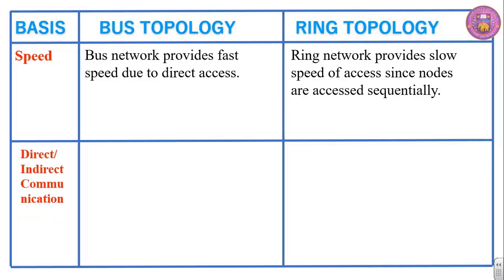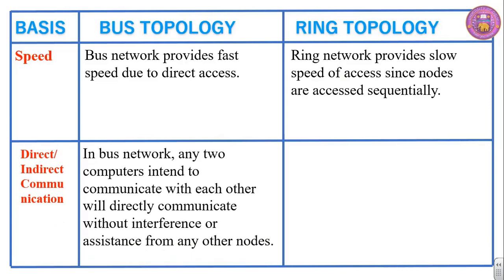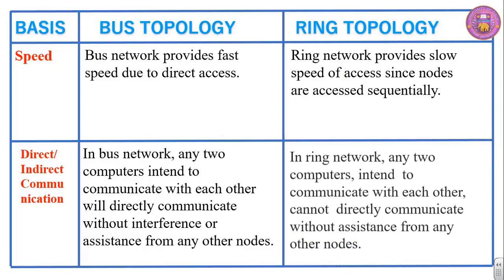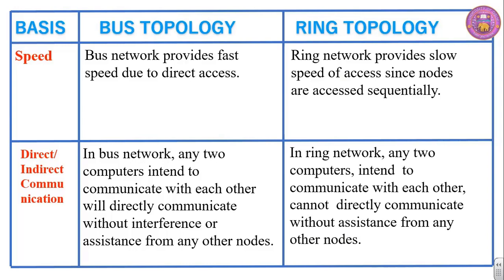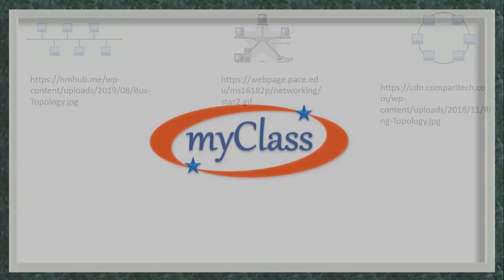Direct or indirect communication. In a bus network, any two computers intending to communicate will directly communicate without interference or assistance from any other nodes. In a ring network, any two computers intending to communicate cannot directly communicate without assistance from other nodes. These were some of the points on which we can make a distinction between bus topology and ring topology. Thank you very much.